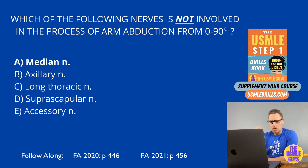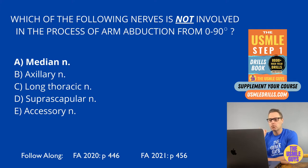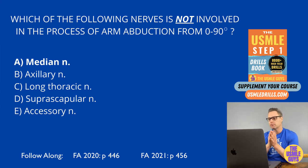We're dealing with arm abduction from zero to 90 degrees, and there are four muscles involved: supraspinatus, deltoid, trapezius, and serratus anterior. From zero to 15 degrees, the supraspinatus is responsible for movement, innervated by the suprascapular nerve. From 15 to 90 degrees, the deltoid is the predominating muscle for abduction, innervated by the axillary nerve.